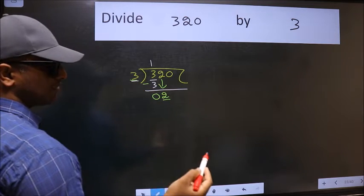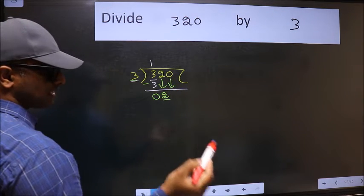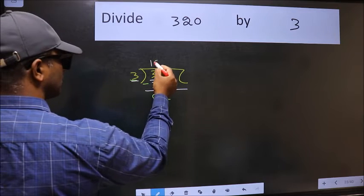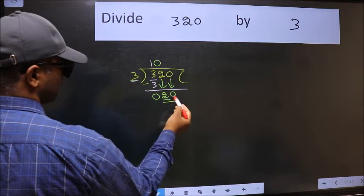So, we should bring down the second number. And the rule to bring down the second number is, we should put 0 here. Then only we can bring this number down. Now, 20.